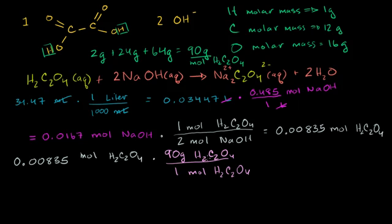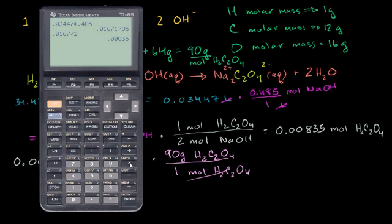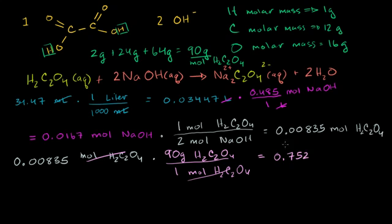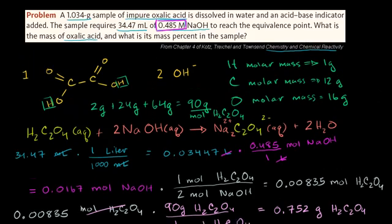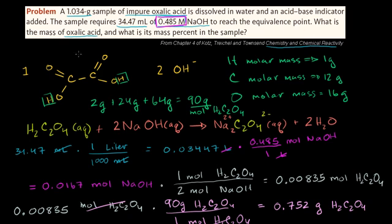Now we multiply this number and figure out the grams of oxalic acid. The moles cancel out. We take the number of moles times 90. The previous answer, which is the number of moles of oxalic acid, times its molar mass gives us grams. We get 0.752. Rounding to three significant digits, this equals 0.752 grams of oxalic acid, H2C2O4. And I think we've answered part of the question. What is the mass of oxalic acid? We've just answered it: 0.752 grams.